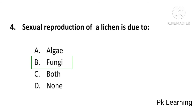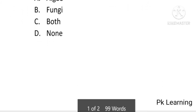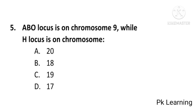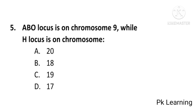B is the correct option. Next question: the ABO locus is on chromosome 9, while the H locus is on chromosome — 20, 18, 19, or 17? The answer is C — 19. The H locus is on chromosome number 19. C is the correct option. Thank you all for watching; please like the video and subscribe to the channel.